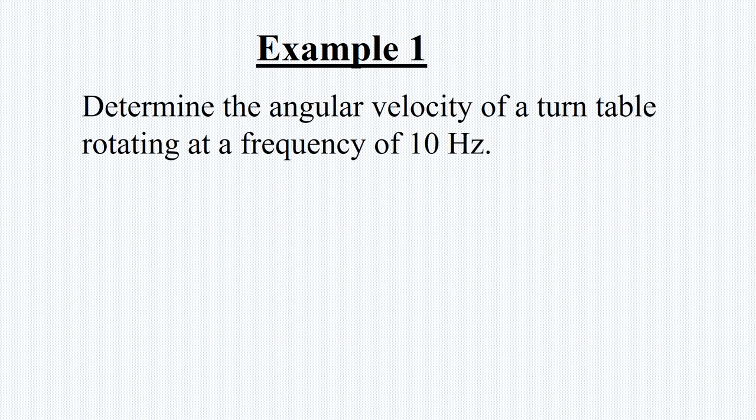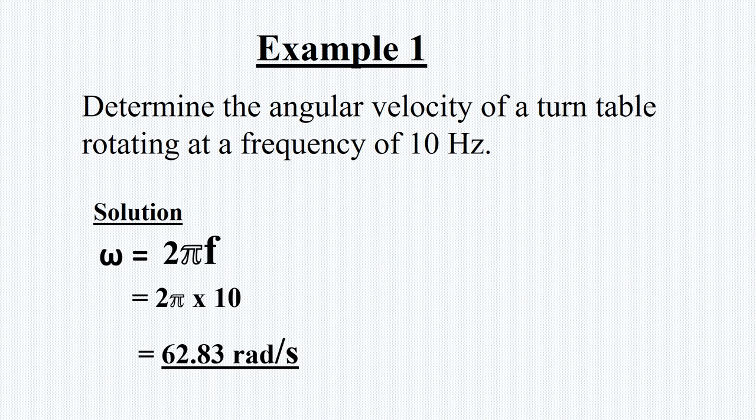For example, let's look at some questions. Number one: determine the angular velocity of a turntable. We have omega equals delta theta over delta t. We have omega equals 2πf. Since we know that omega equals 2πf, we need to substitute f in the formula so that we have 2π times 10. Simplifying this we get 62.83 radians per second.